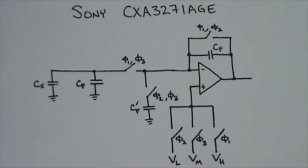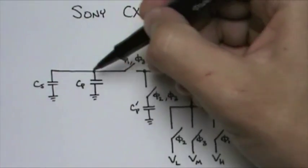How does the chip measure the capacitance? This circuit was taken from the Sony CXA3271AGE, but whatever scheme our chip uses is going to be something similar. In this schematic, this node is the sensor node.